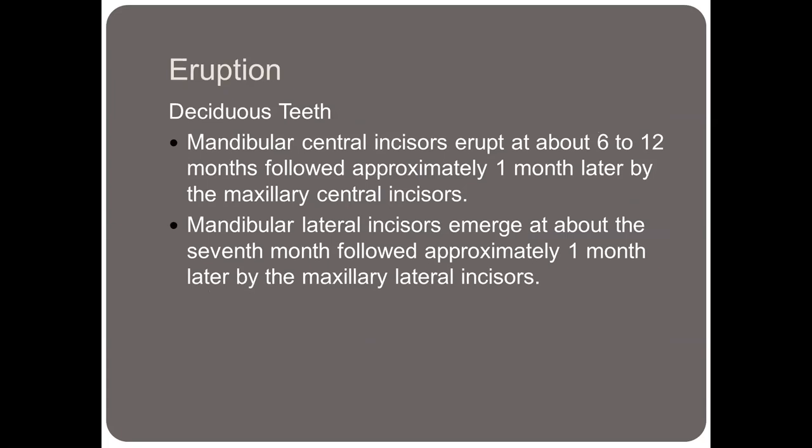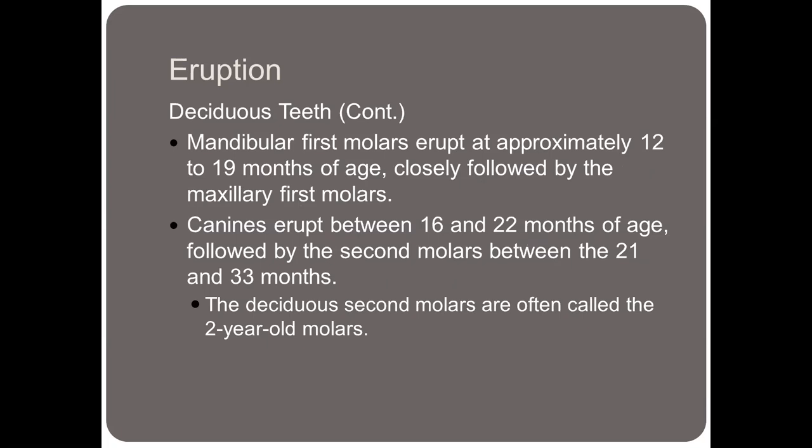Mandibular central incisors erupt at about 6 to 12 months of age, followed approximately one month later by the maxillary centrals. The mandibular laterals emerge at about the seventh month, followed approximately one month later by the maxillary laterals. Mandibular first molars erupt at approximately 12 to 19 months of age, closely followed by the maxillary first molars. The canines erupt between 16 and 22 months of age, followed by the second molars at about 21 to 33 months. Deciduous first molars are often called one-year molars, and the deciduous second molars are called two-year molars.